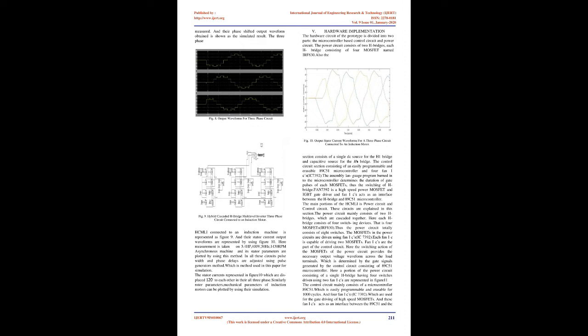By opening and closing the switches of H1 appropriately, the output voltage V1 can be made equal to VDC, 0, or −VDC, while the output voltage of H2 can be made equal to +VDC/2, 0, or −VDC/2. Therefore, the output voltage of the inverter can have the values −3VDC/2, −VDC, −VDC/2, 0, VDC/2, VDC, and 3VDC/2, which constitutes seven levels.